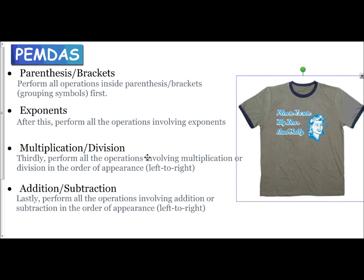When working with multiplication and division, you do them in order from left to right. The reason is that multiplication and division are inverse operations of each other. You can change multiplication into division by multiplying by a fraction, or change division into multiplication by dividing by a fraction. Since they're inverses, you must work through them from left to right as they appear in the problem.